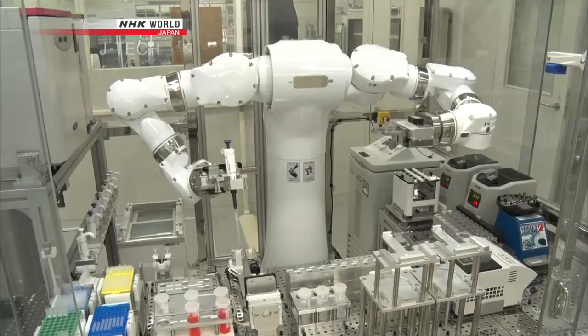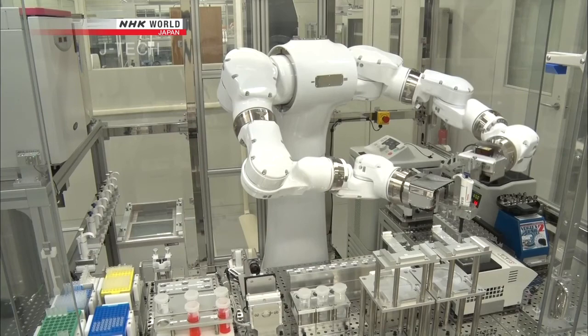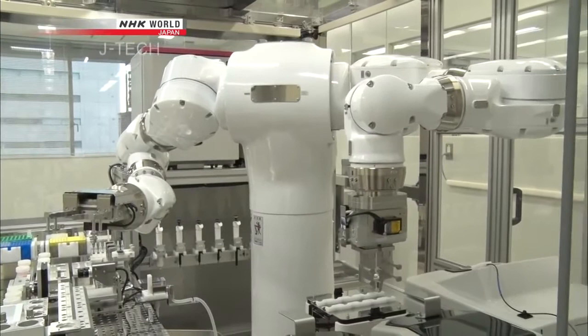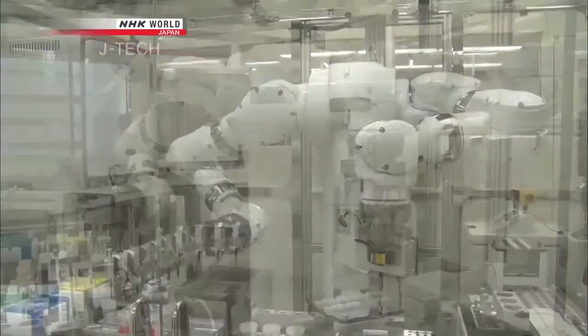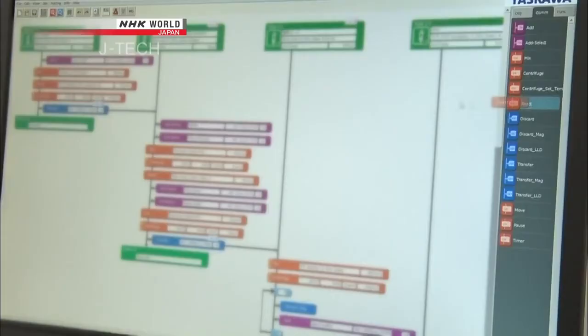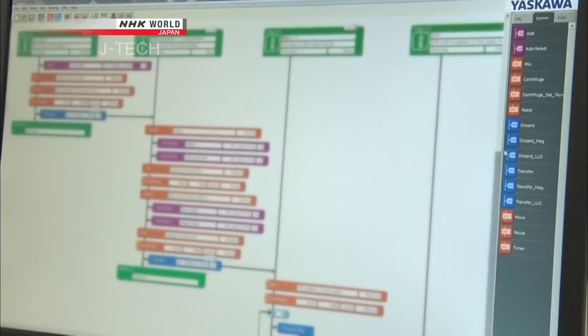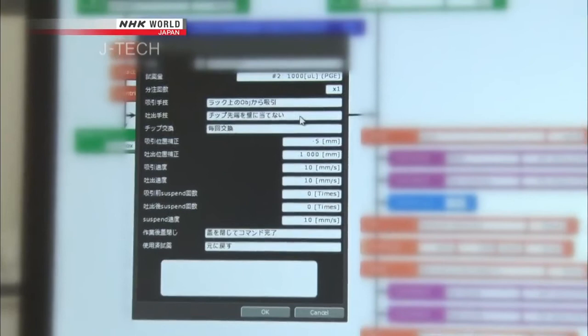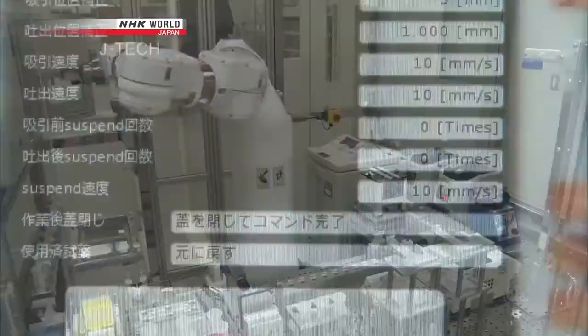Today, Yasukawa Electric is also a player in the pharmaceutical industry, where robots are more efficient than humans when making new drugs. This robot's control system is easy to use. It can perform more than 50 different tasks, including adding and mixing reagents to produce chemical reactions. When appropriate times and quantities are input into the commands, the robot conducts the experiment as instructed in the designated order and with extreme precision.